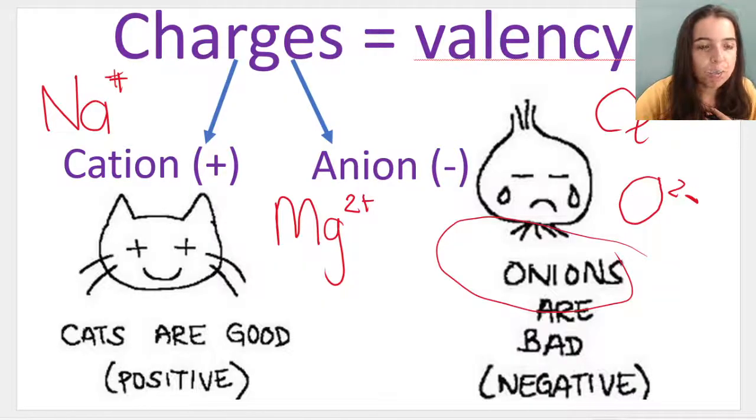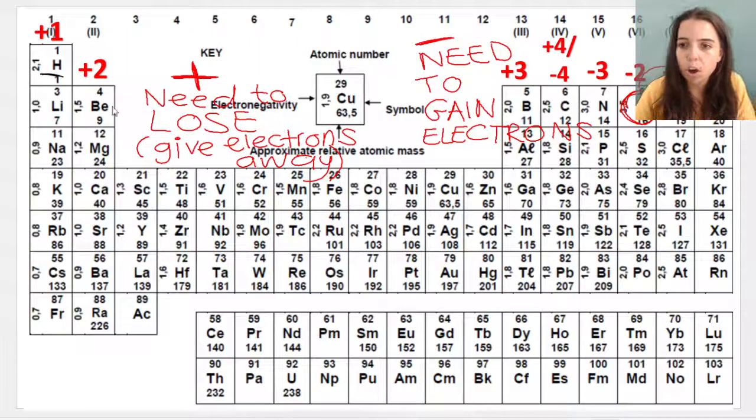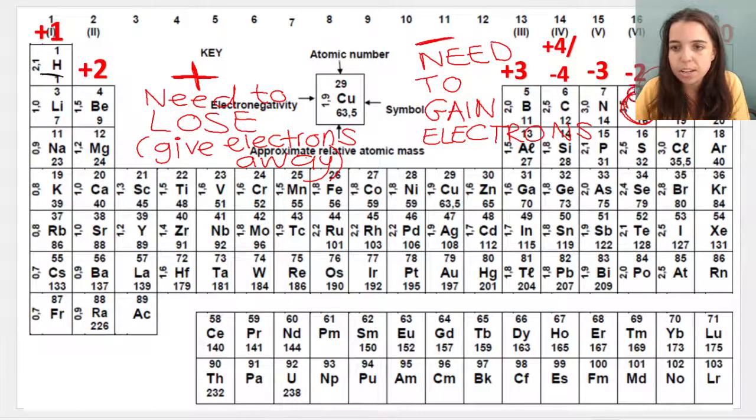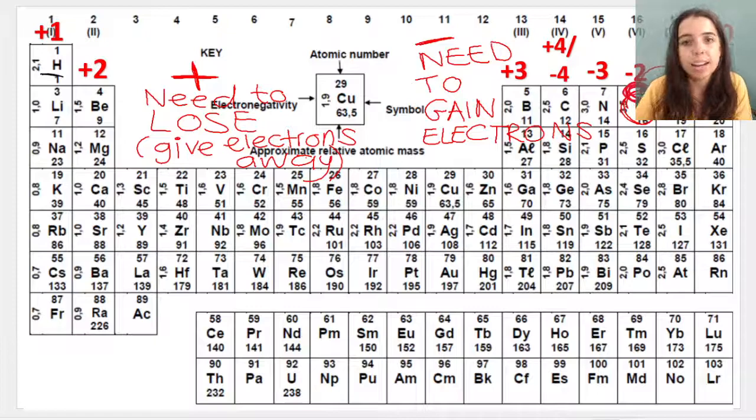O2 minus means that the oxygen atom has gained two extra electrons. And again, if we look at the periodic table, look at where oxygen is. Oxygen has a little eight. That's eight electrons. Neutral oxygen atom. If it gains two electrons, it's going to have 10, which is the same as a noble gas neon.